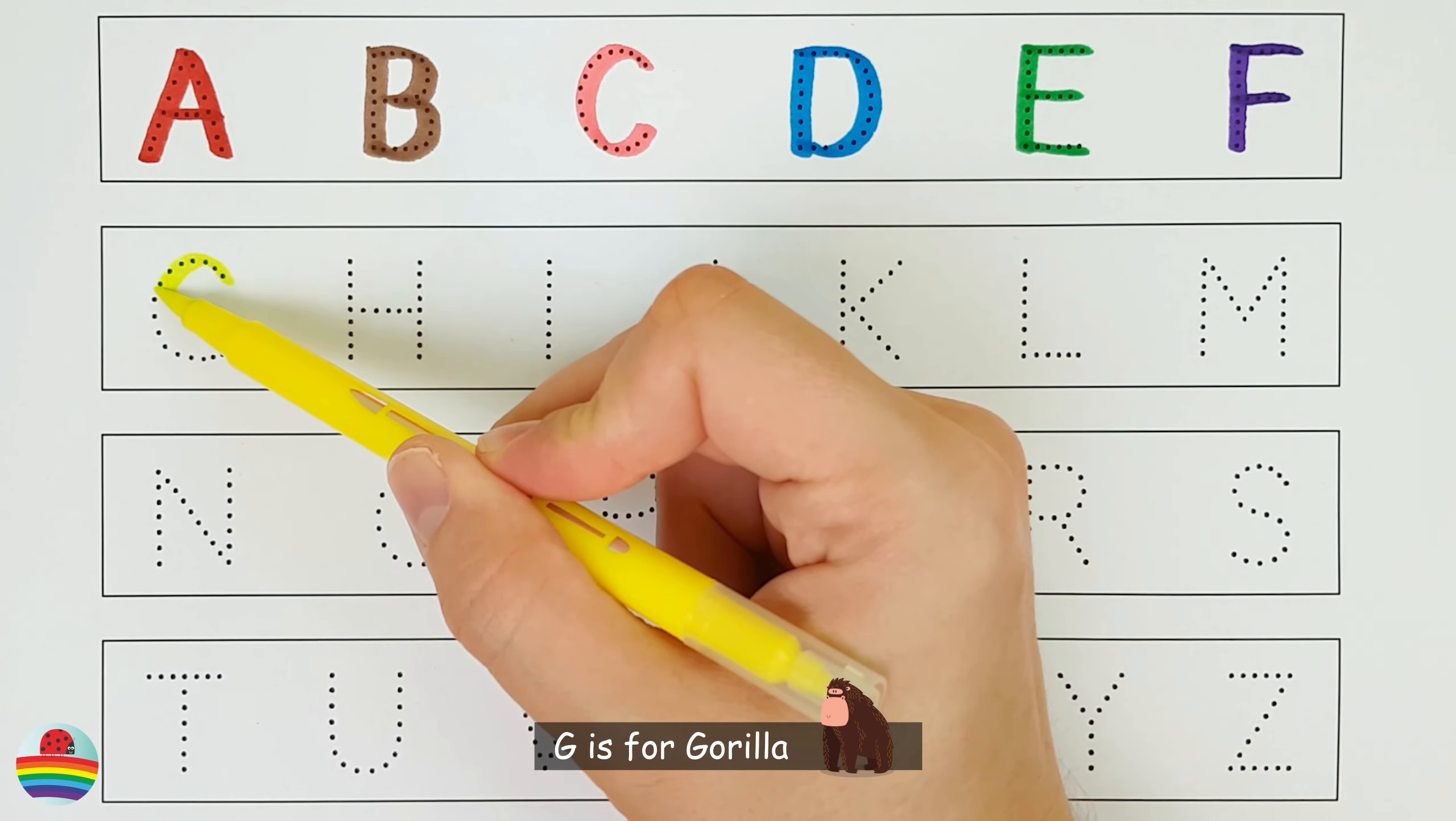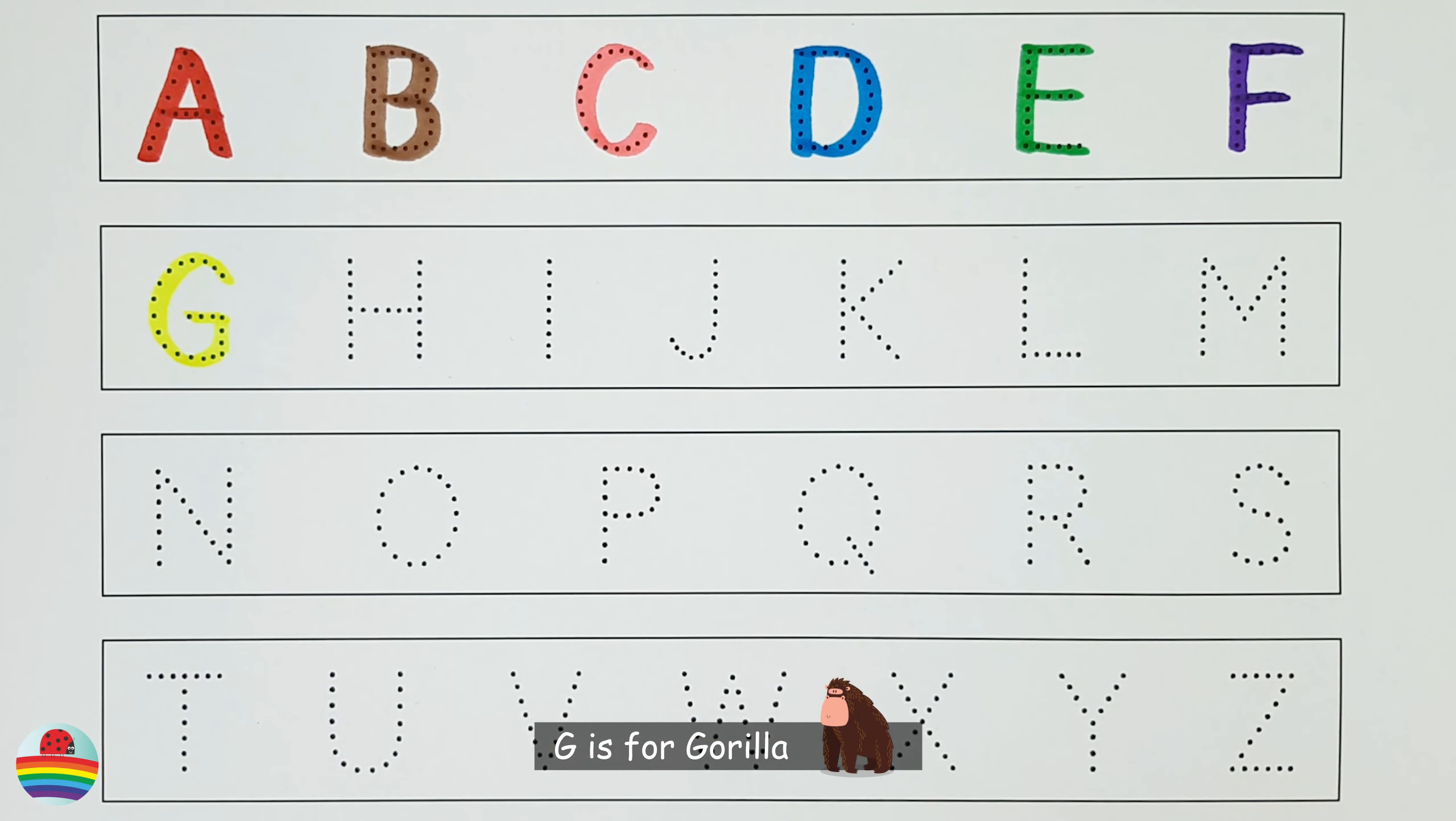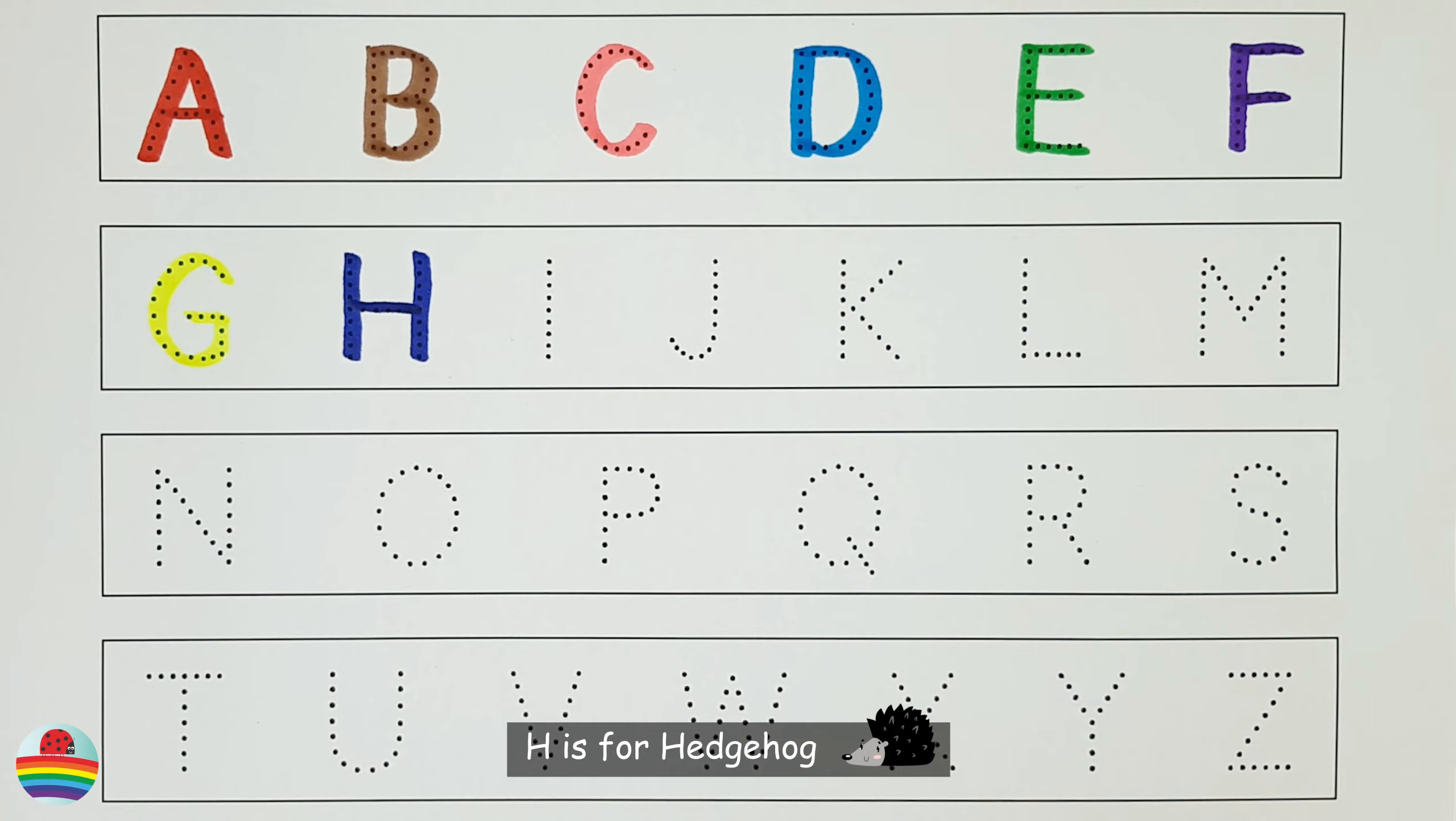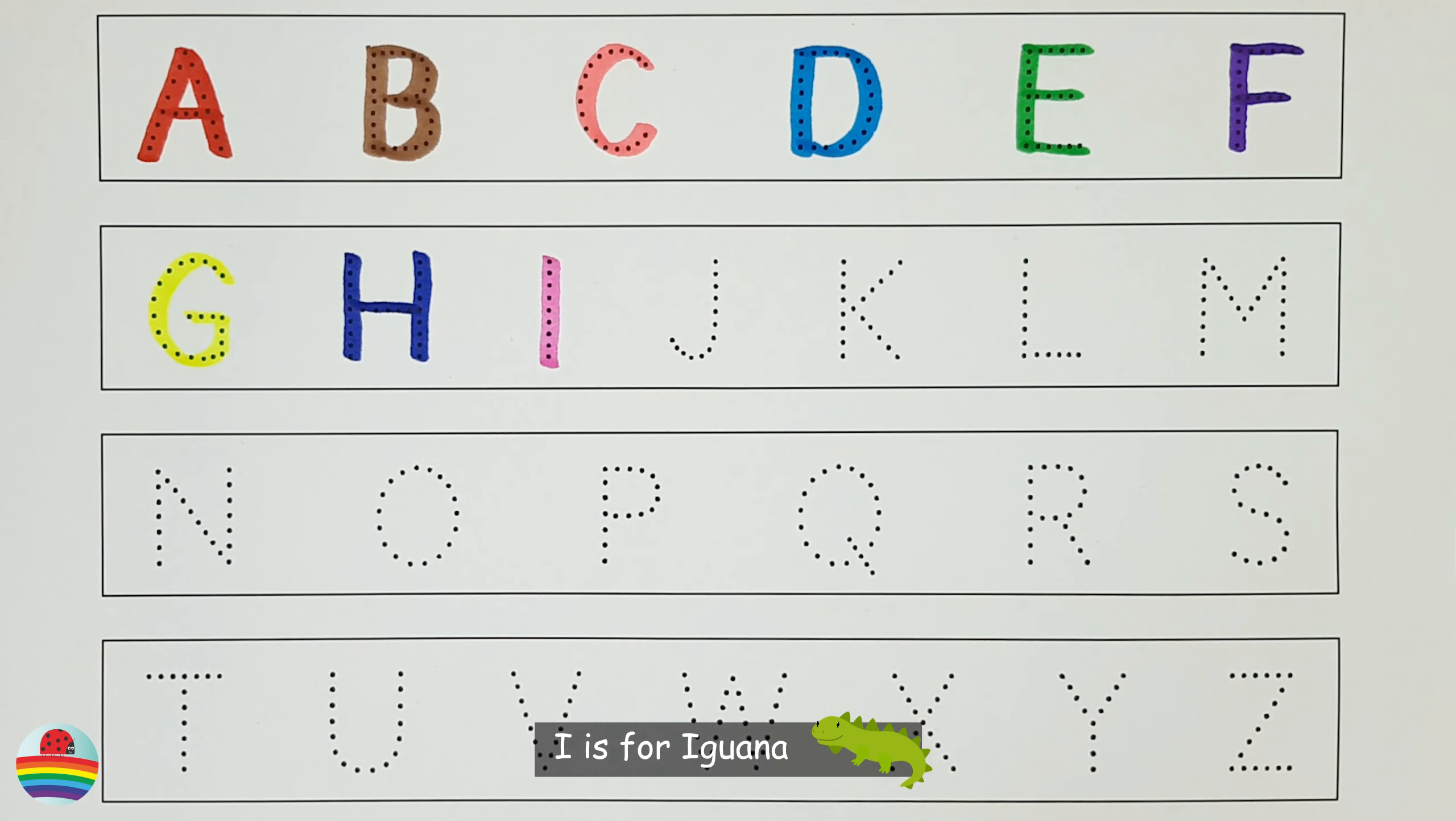G. G is for Gorilla. G. H. H is for Hedgehog. H. I. I is for Iguana. I.